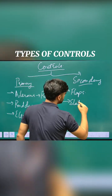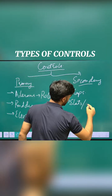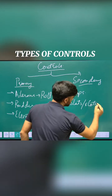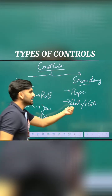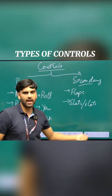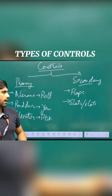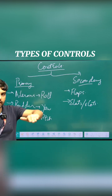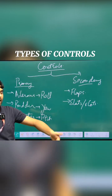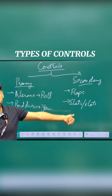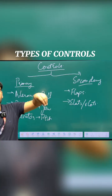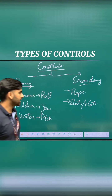Another secondary control is slats and slots. Basically, they are used for smooth airflow in front of the wing when flying at a higher angle of attack. They are usually situated on the leading edge of the aircraft.